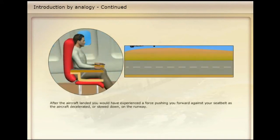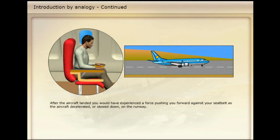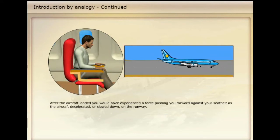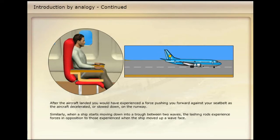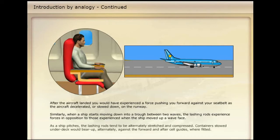After the aircraft landed, you would have experienced a force pushing you forward against your seat belt as the aircraft decelerated, or slowed down, on the runway. Similarly, when a ship starts moving down into a trough between two waves, the lashing rods experience forces in opposition to those experienced when the ship moved up a wave face. As a ship pitches, the lashing rods tend to be alternately stretched and compressed. Containers stowed under deck would bear up alternately against the forward and after cell guides, where fitted.